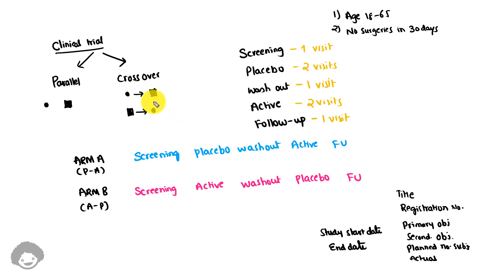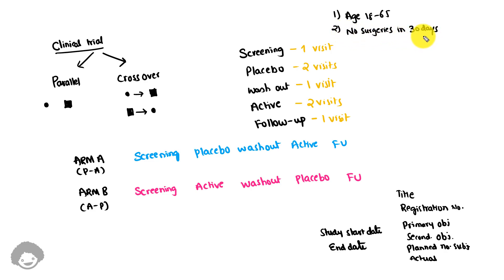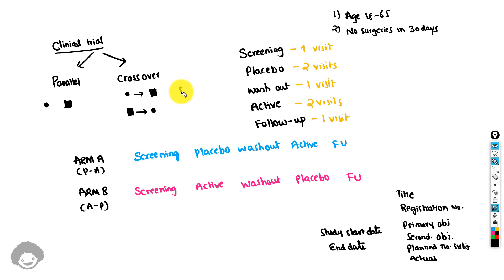In a crossover trial, the same subject receives both treatments across different time points. Let's say we are working on a crossover trial where the inclusion criteria states the subject should be between 18 to 65 years of age, and the exclusion criteria states the subject should not have had any surgeries in the last 30 days. In this crossover study, two treatments are being compared: placebo and active.